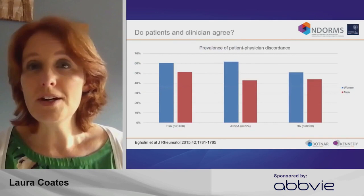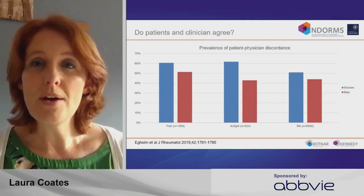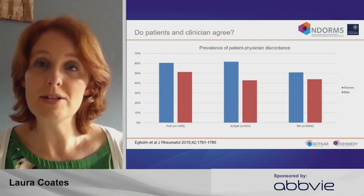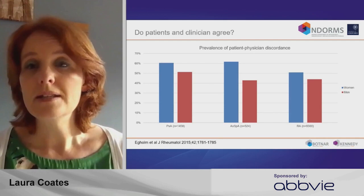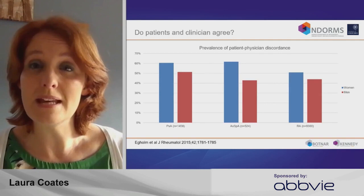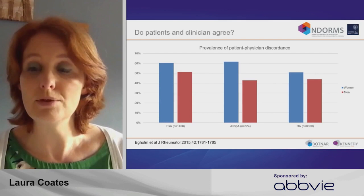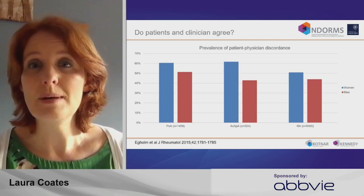Our first question is: what do patients and clinicians feel is remission? We know across multiple diseases that the opinions of patients and clinicians often differ. This slide looks at the prevalence of patient-physician discordance — where a patient global and a physician global are markedly different. You can see that's present in 50 to 60% of psoriatic arthritis patients, and a similar proportion in axial SpA and in rheumatoid, suggesting we're thinking about different things when we measure disease activity.